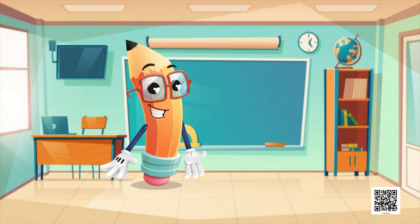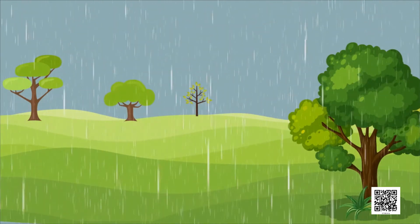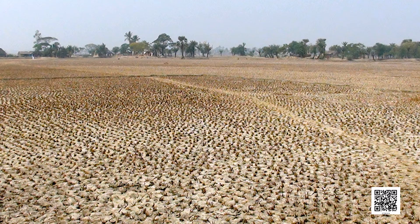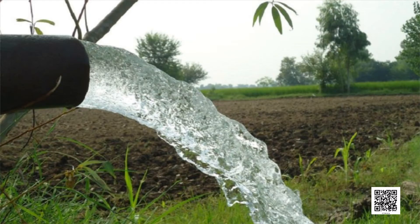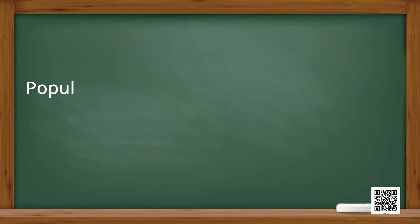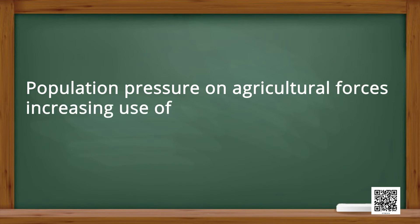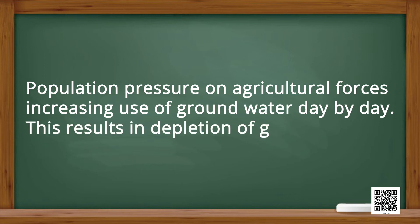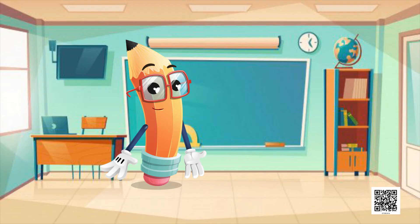The third reason is agricultural activities. A majority of farmers in India depend upon rain for irrigation. This may suffer from lack of water due to erratic rainfall. Therefore, some farmers have to use groundwater for irrigation. Population pressure on agriculture forces increasing use of groundwater day by day, which results in depletion of groundwater.